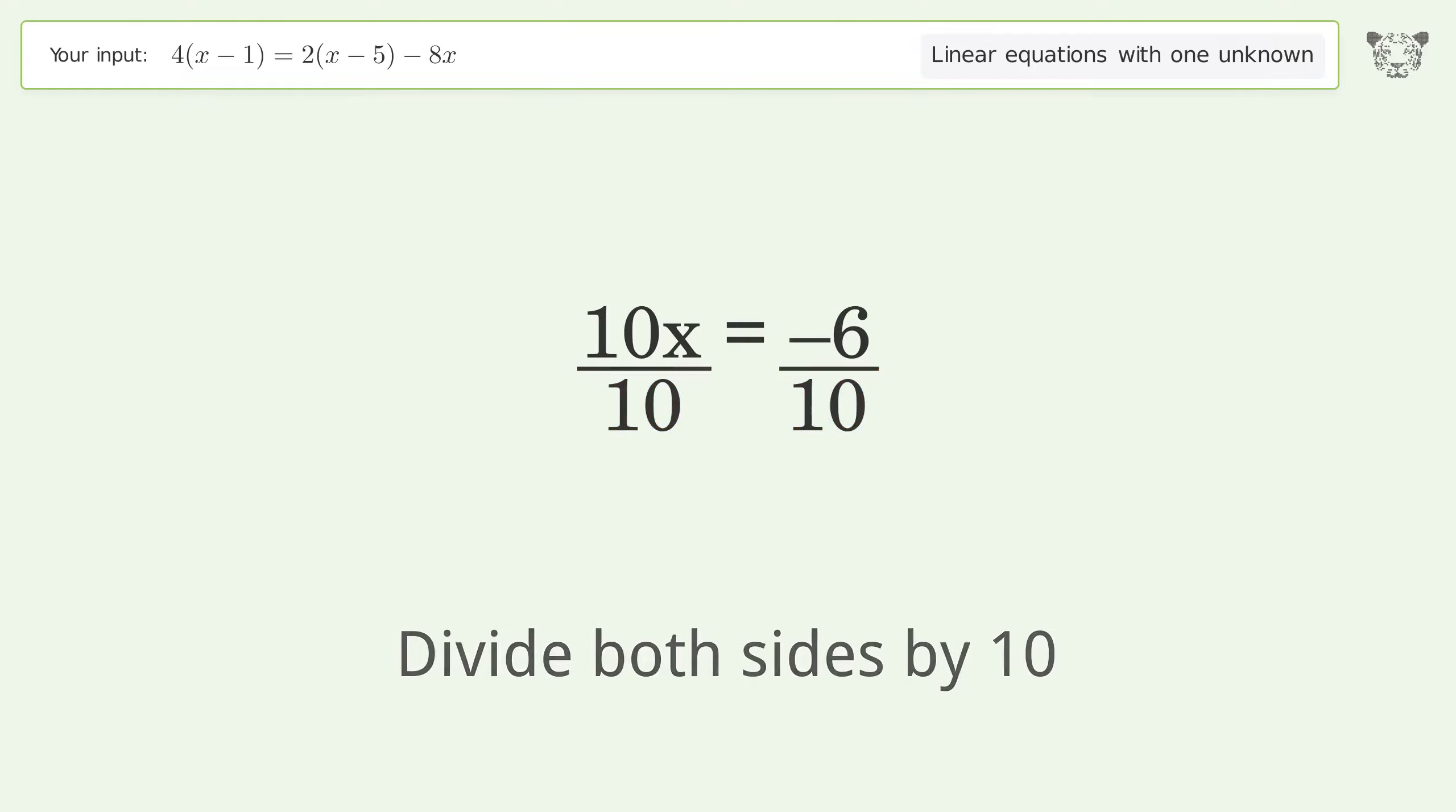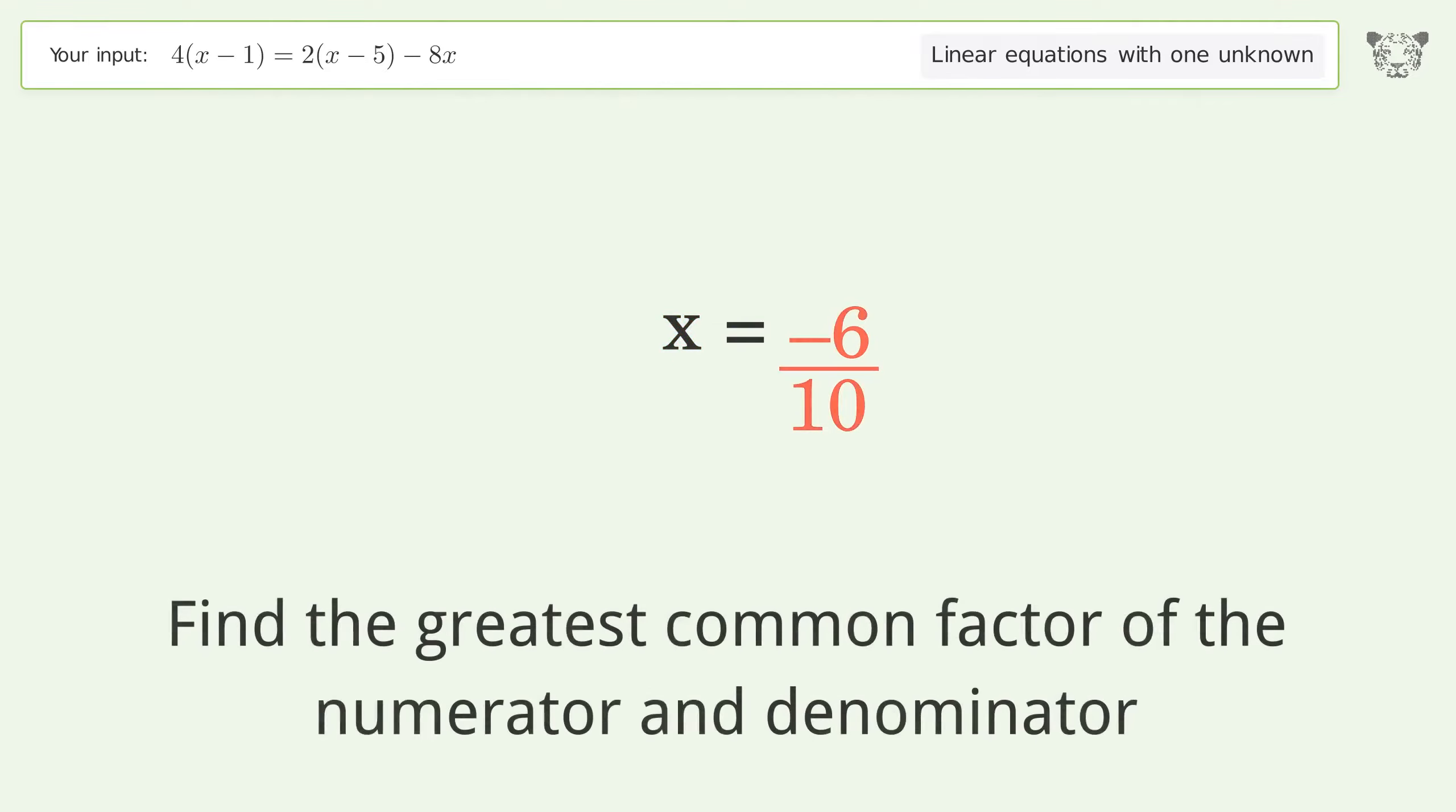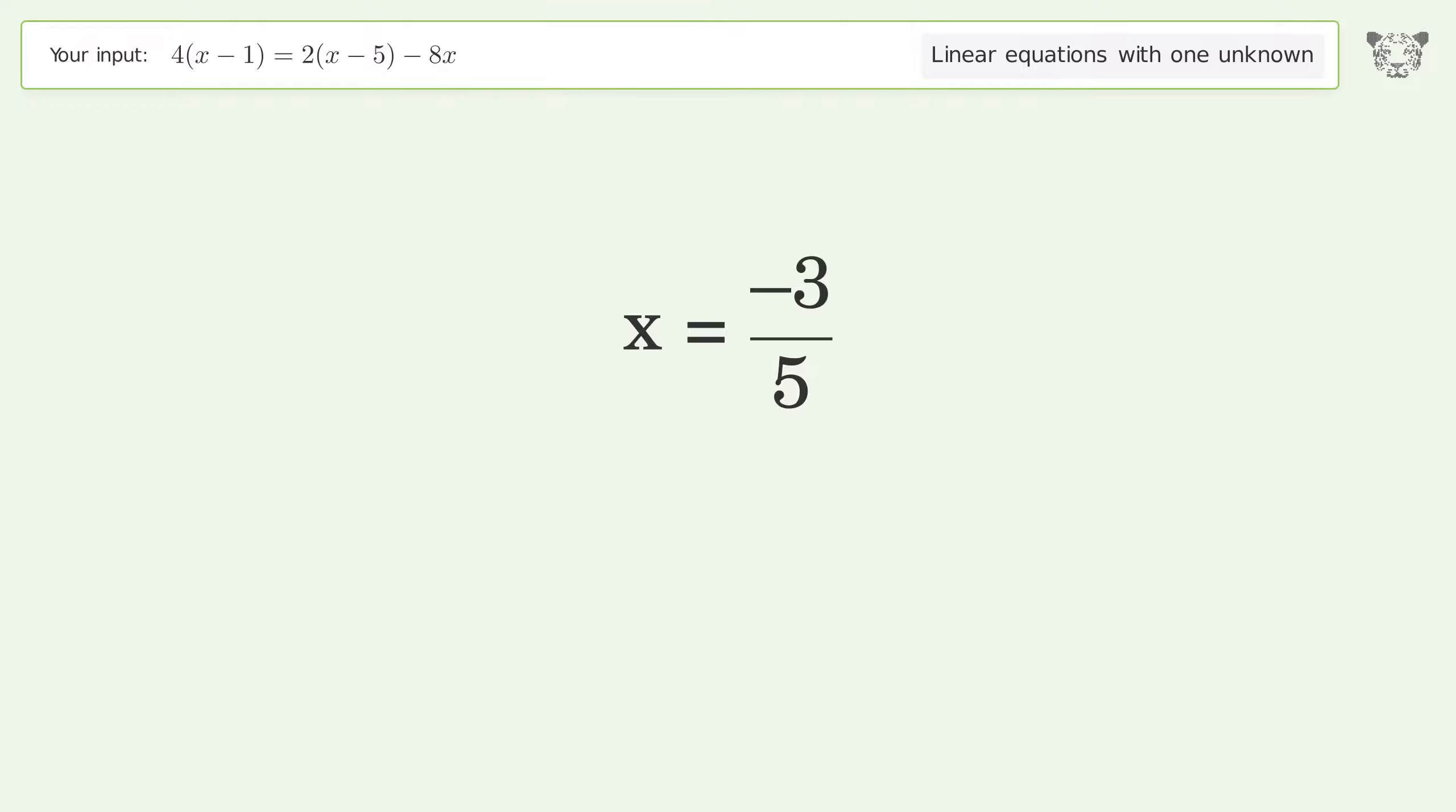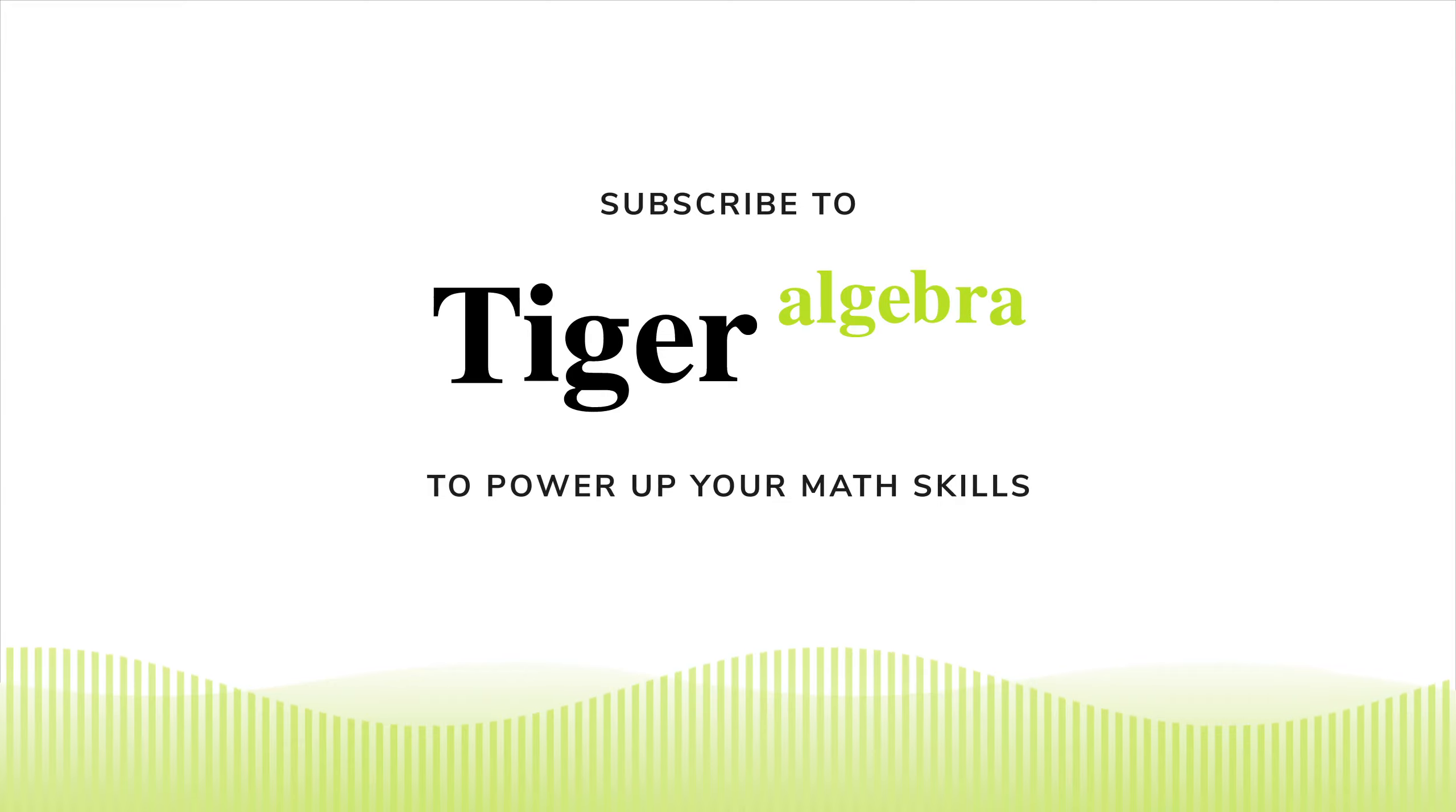Simplify the arithmetic. Isolate the x. Divide both sides by 10. Simplify the fraction. Find the greatest common factor of the numerator and denominator. Factor out and cancel the greatest common factor. And so the final result is x equals negative 3 over 5.